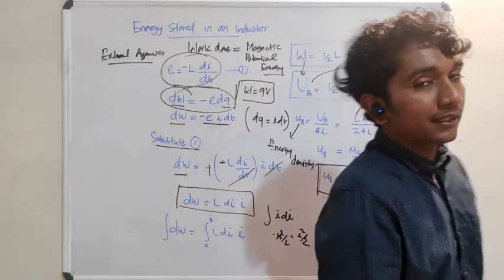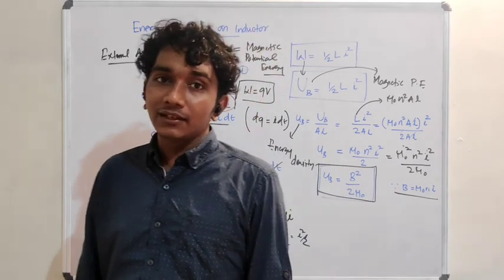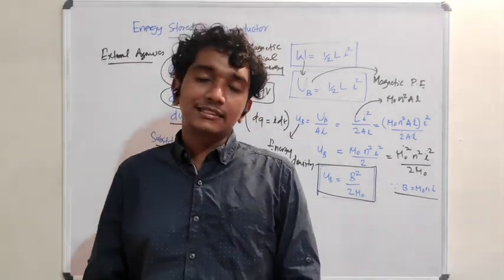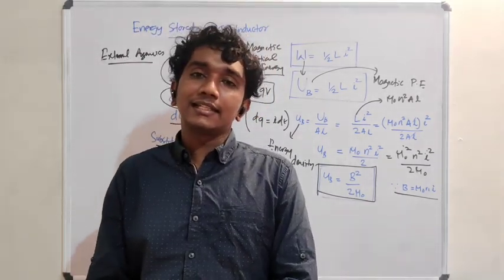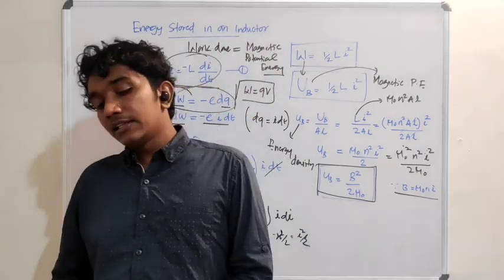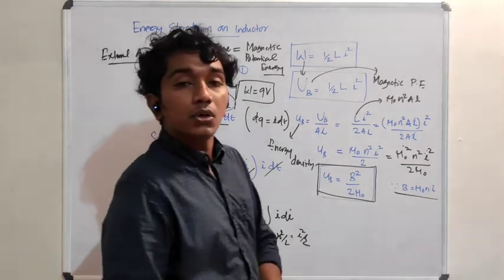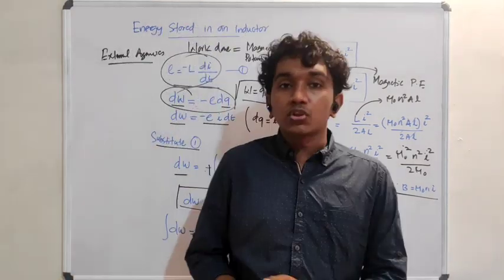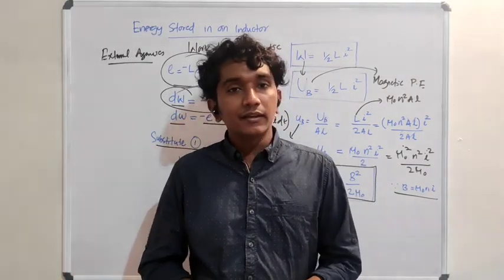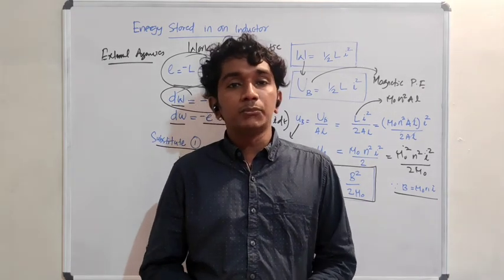Please keep this equation in mind: uB = B²/(2μ₀). In capacitors, we studied the corresponding electric field energy density — you can compare both of them. We will solve some more problems using these two formulae, and then we will continue with mutual induction.